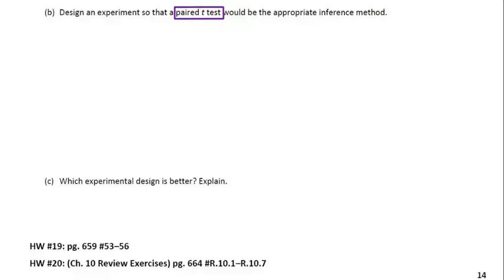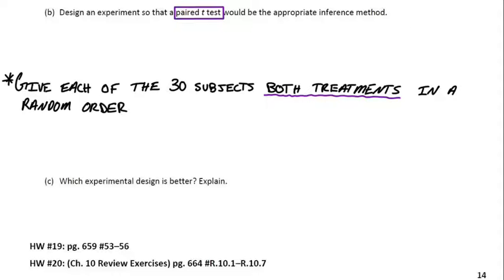So what would be the other way that we could go about designing this experiment so that we could use a paired T test? Well, what if we gave each subject both treatments, in a random order? So why don't we start out with giving each of the 30 subjects both treatments in a random order?